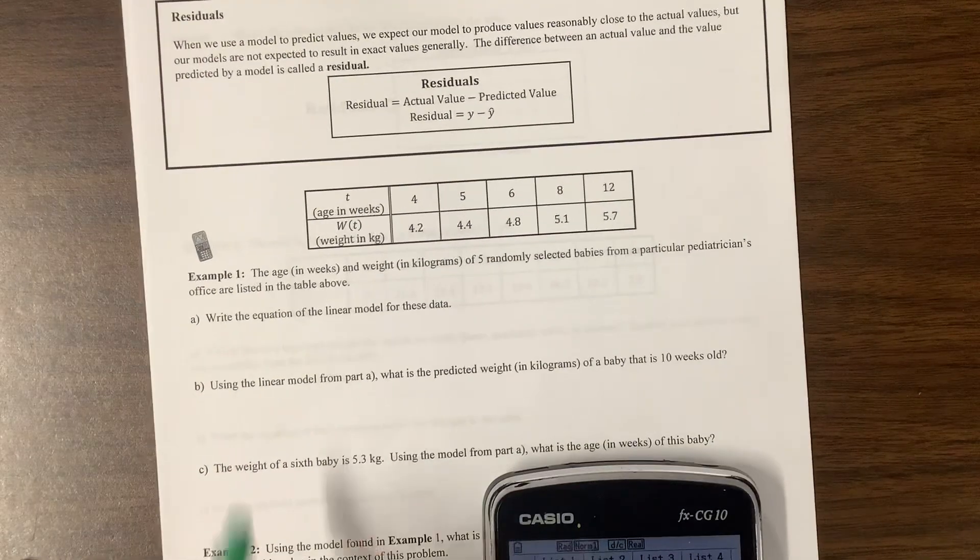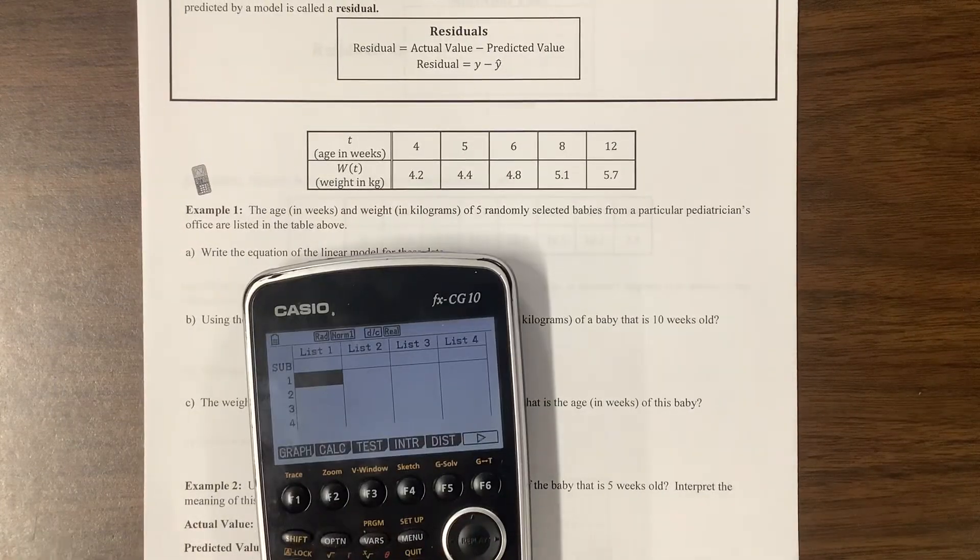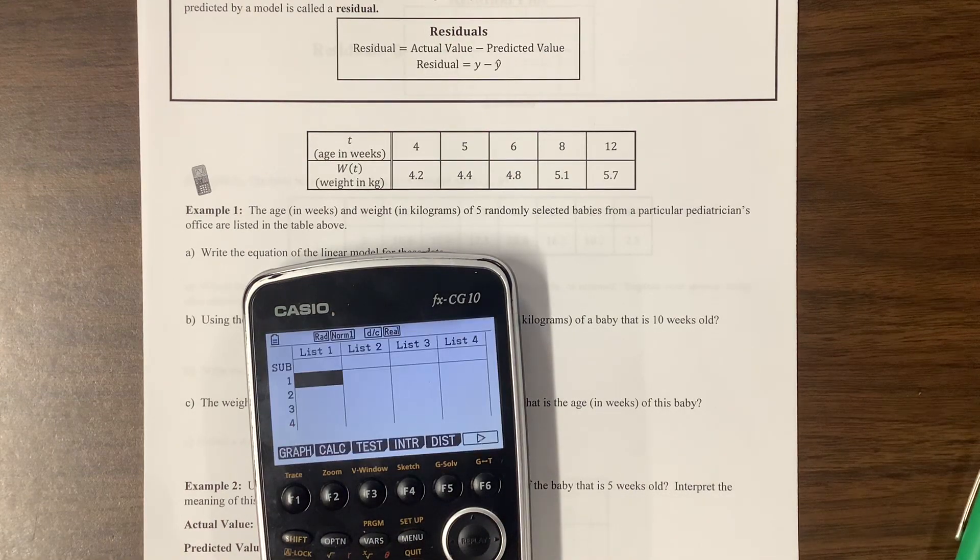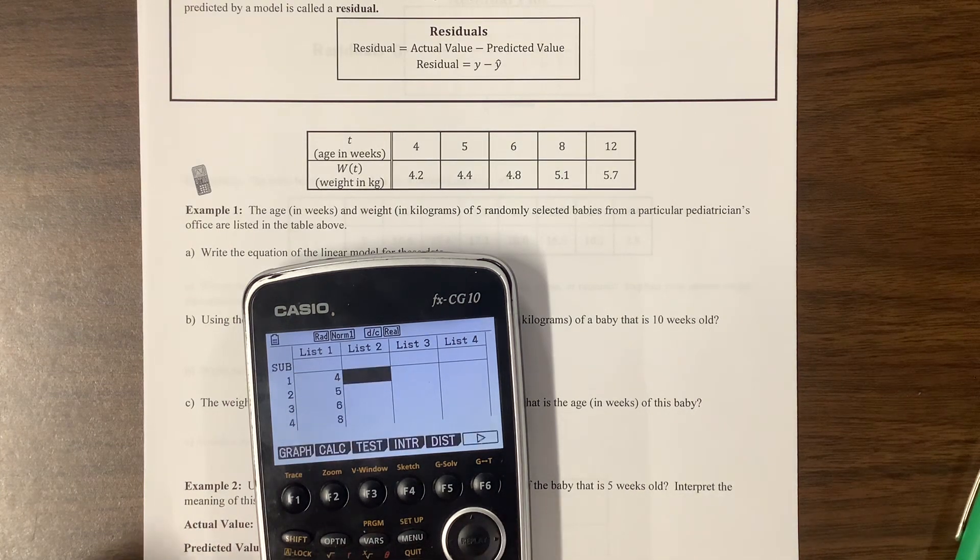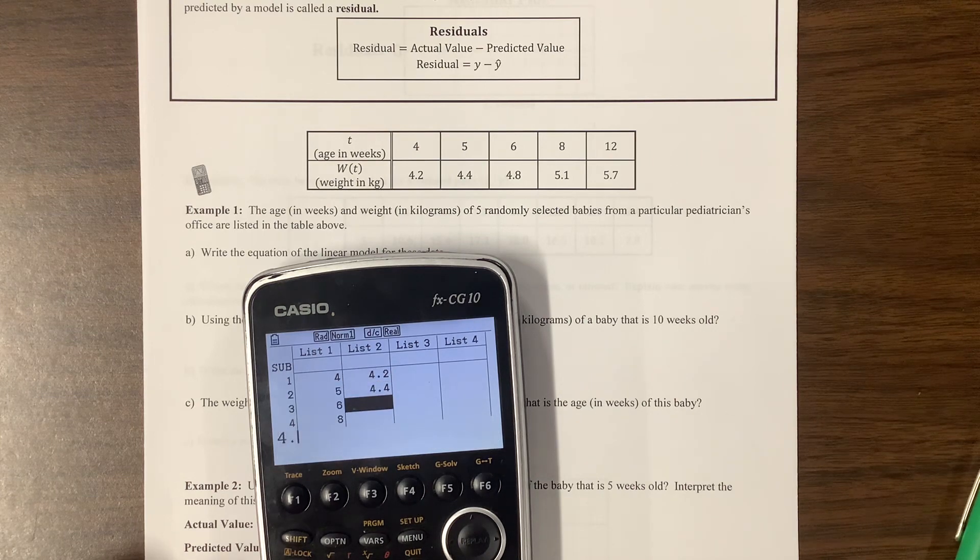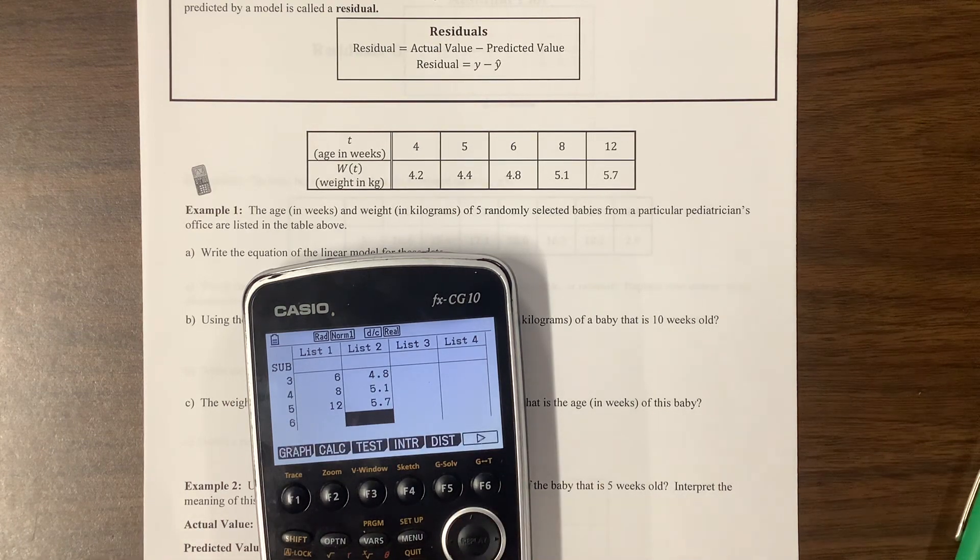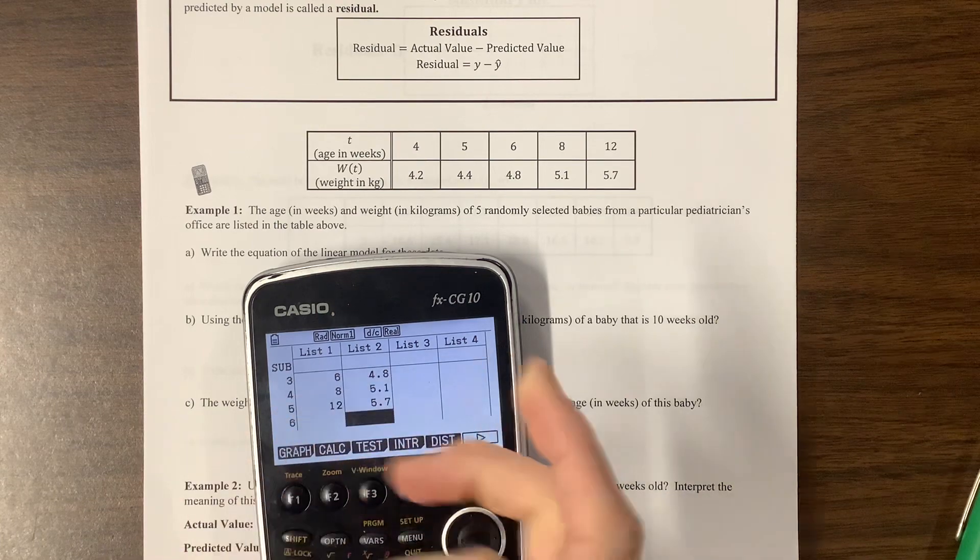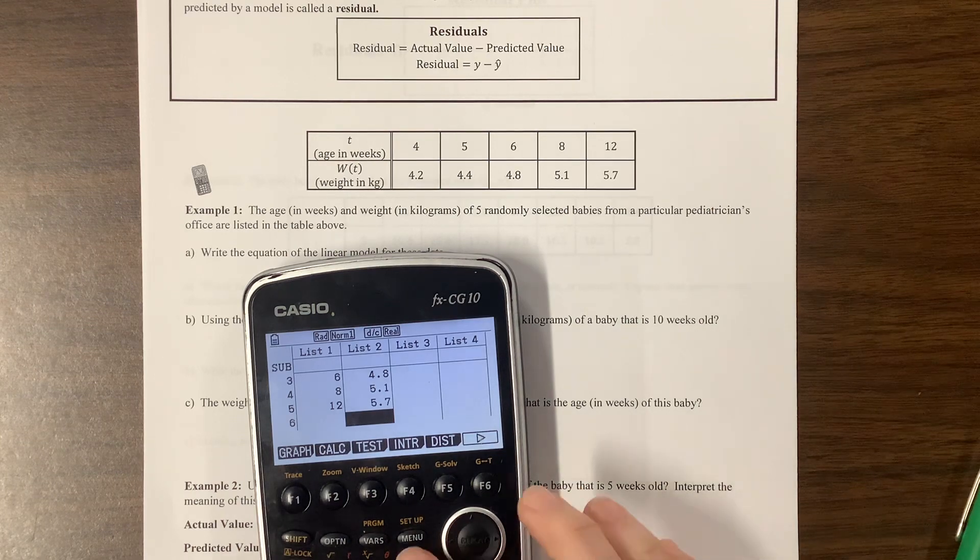So what they've done is they've given us age and weight of babies, age in weeks versus the weight in kilograms. I'm going to begin by entering this. On my Casio, I'm in statistics. So I think you're familiar with this at this point. So 4, 5, 6, 8, 12. Then we're going to come over to 4.2, 4.4, 4.8, 5.1, 5.7. Hopefully I did everything correctly. Sometimes if your answers don't match my answer key from the very beginning, then go back and make sure you didn't type in. I had a kid today in class who, not on this problem, but one similar, needed a 9 and he put a 6. So he didn't get the same answer that we got because he had typed in the wrong thing.